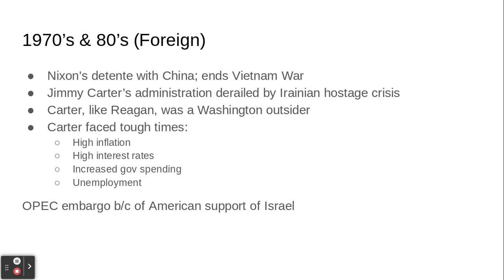Carter also faced major domestic issues: high inflation, high interest rates, increased government spending, and rising unemployment. The 1970s were not a good time economically. The OPEC embargo really damaged the economy because America was supporting Israel in the Yom Kippur War of 1973, so the Arab nations imposed an oil embargo to punish America.